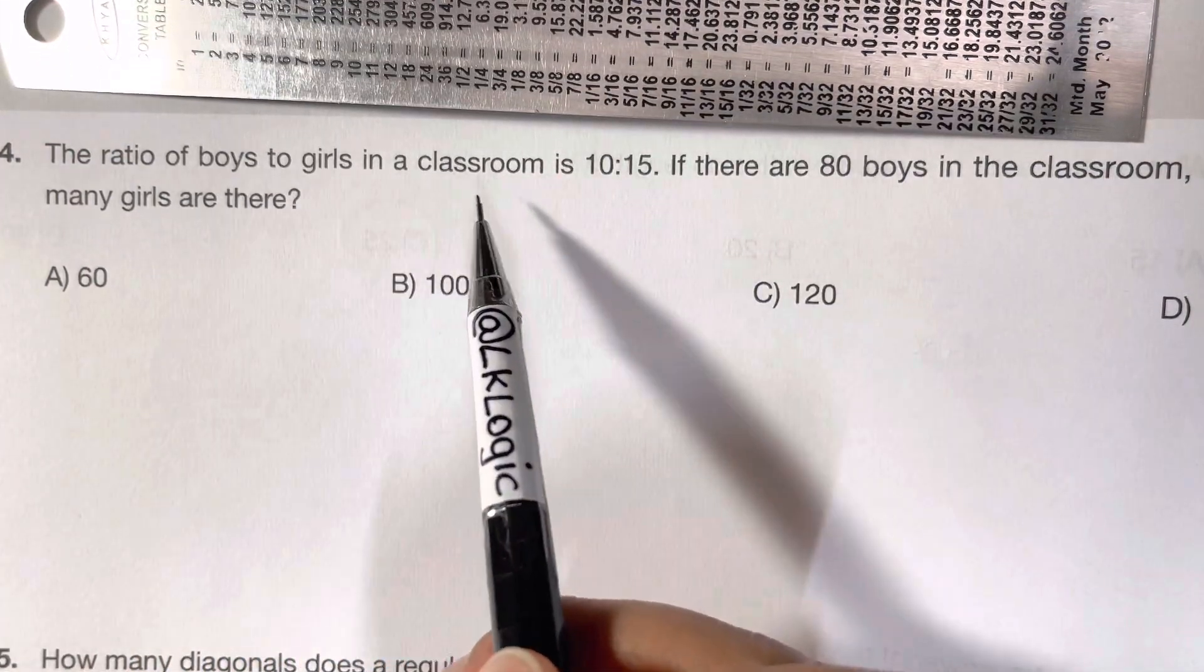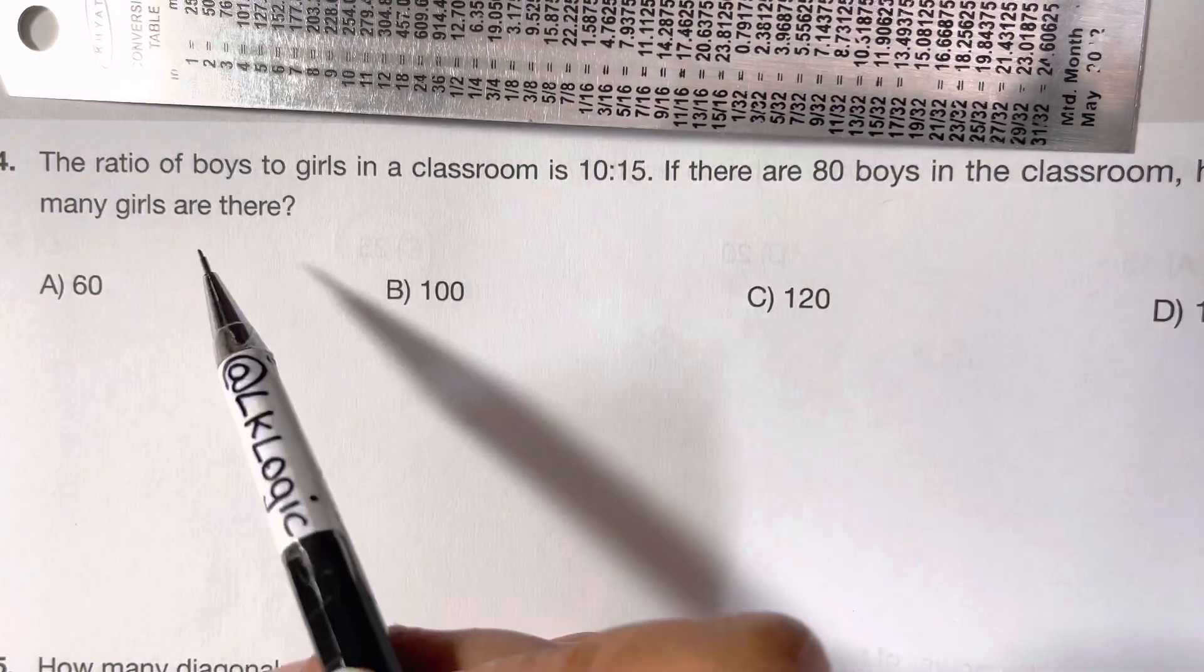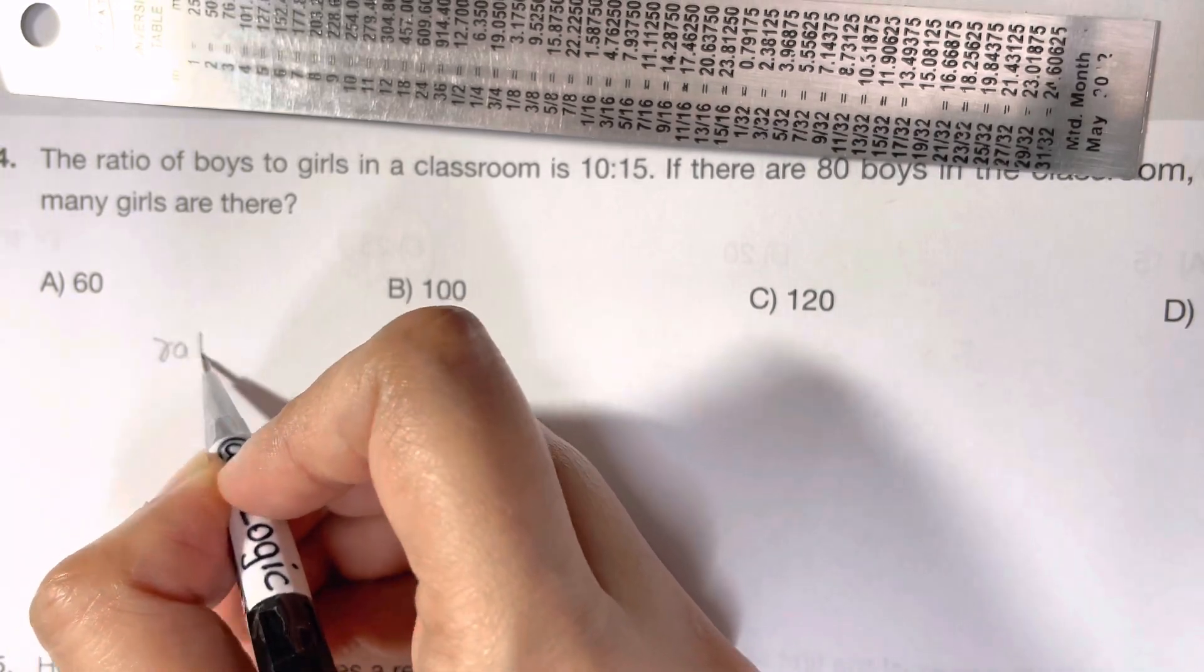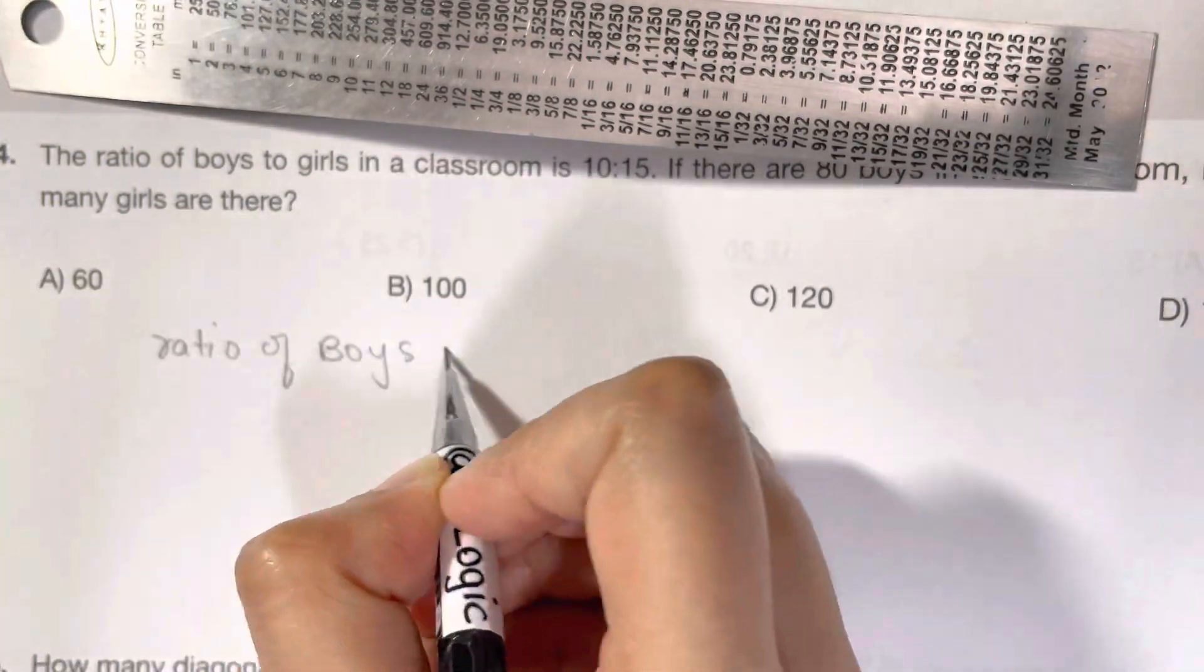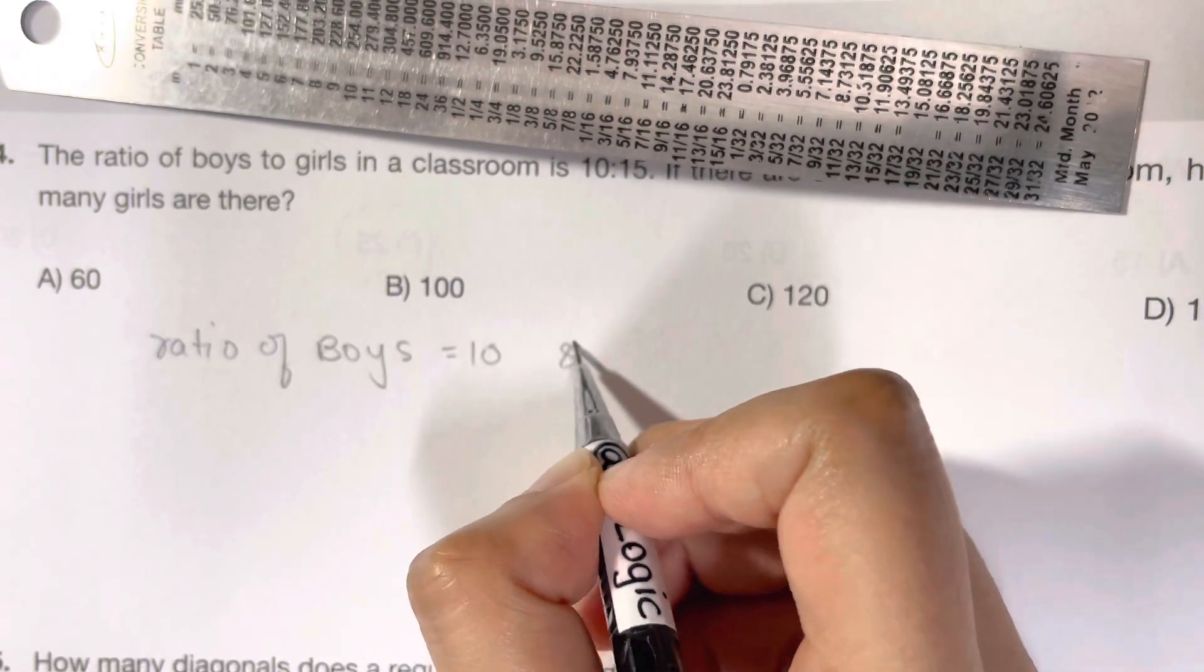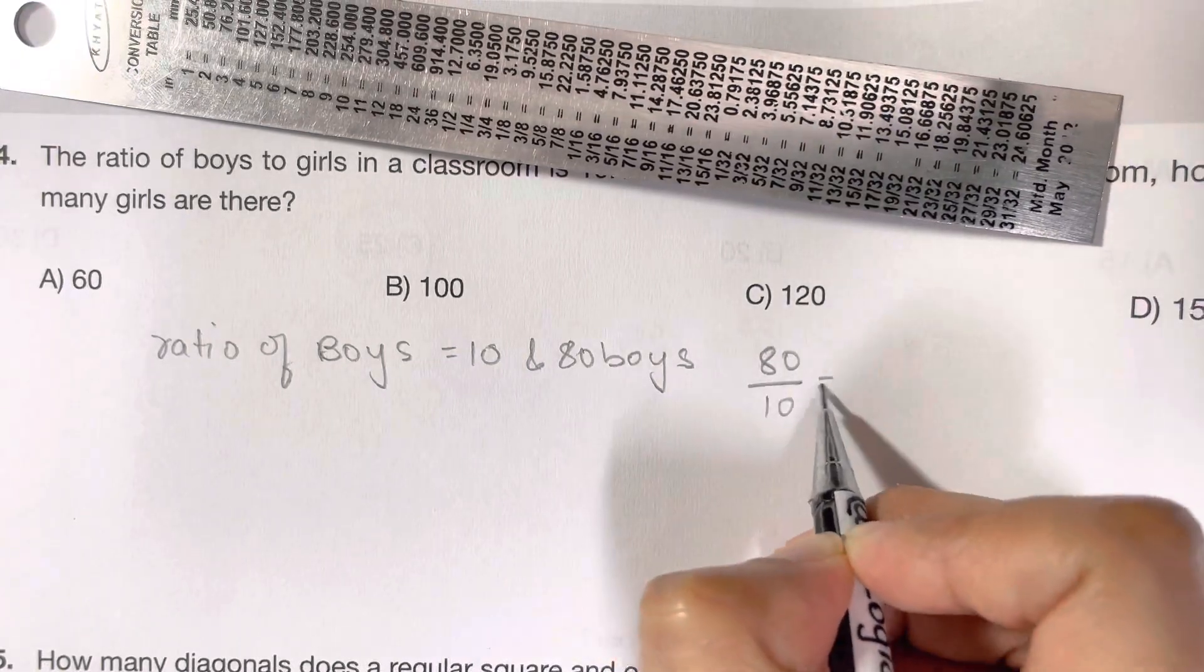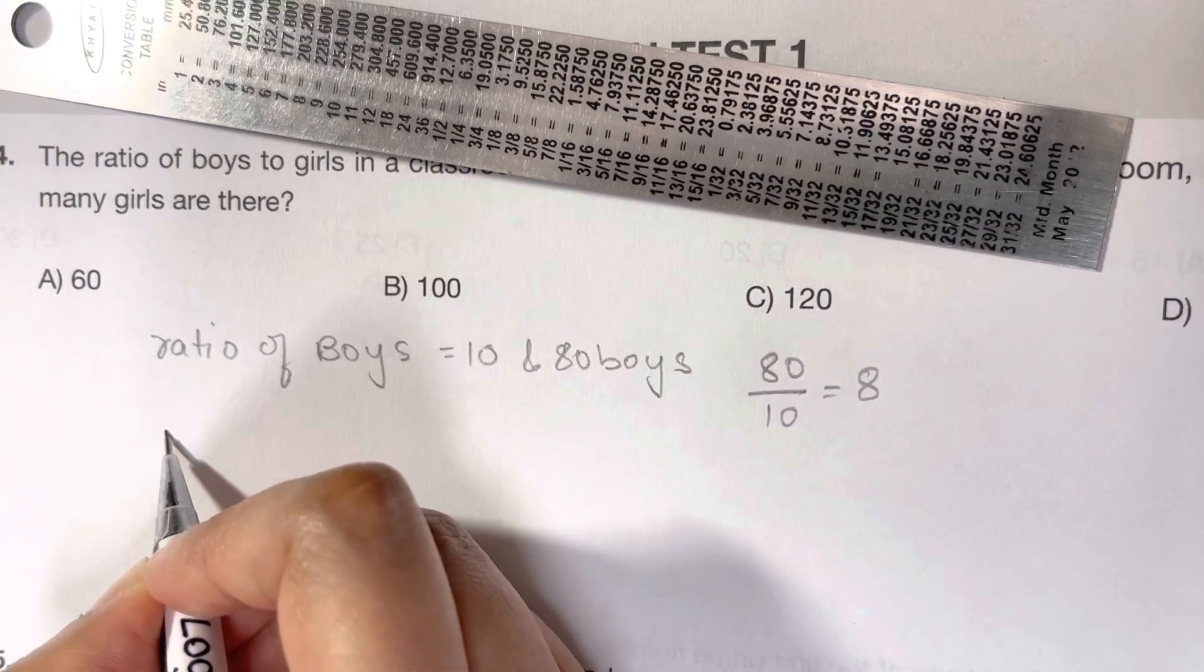The ratio of boys to girls in a classroom is 10 to 15. If there are 80 boys in the classroom, how many girls are there? So the ratio of boys is 10. The ratio of boys is equal to 10, and how many boys are there? There are total 80 boys, so it can be written as 10 boys. Divide 80 divided by 10, so there are 8.